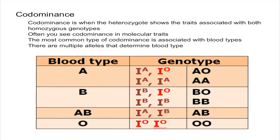When it comes to blood, you have many alleles. These are all the alleles that you can have. IA is the same thing as A, and IO is the same thing as O — it's only written like that by convention. There are multiple alleles that can determine the blood type, so it's not only round or wrinkled peas, for example. Multiple alleles is defined as a trait that is determined by more than two alleles.